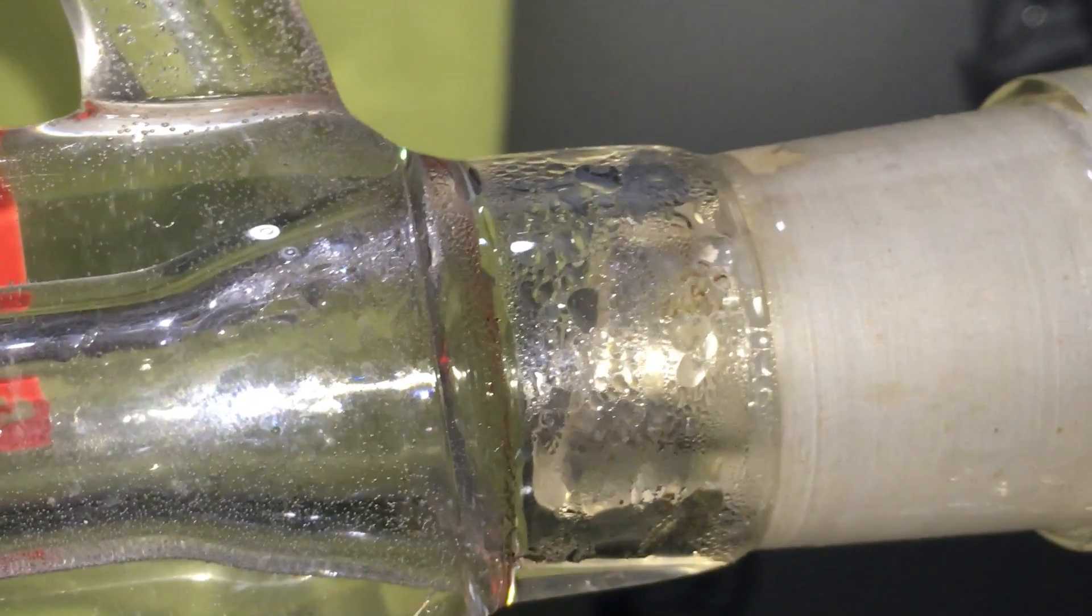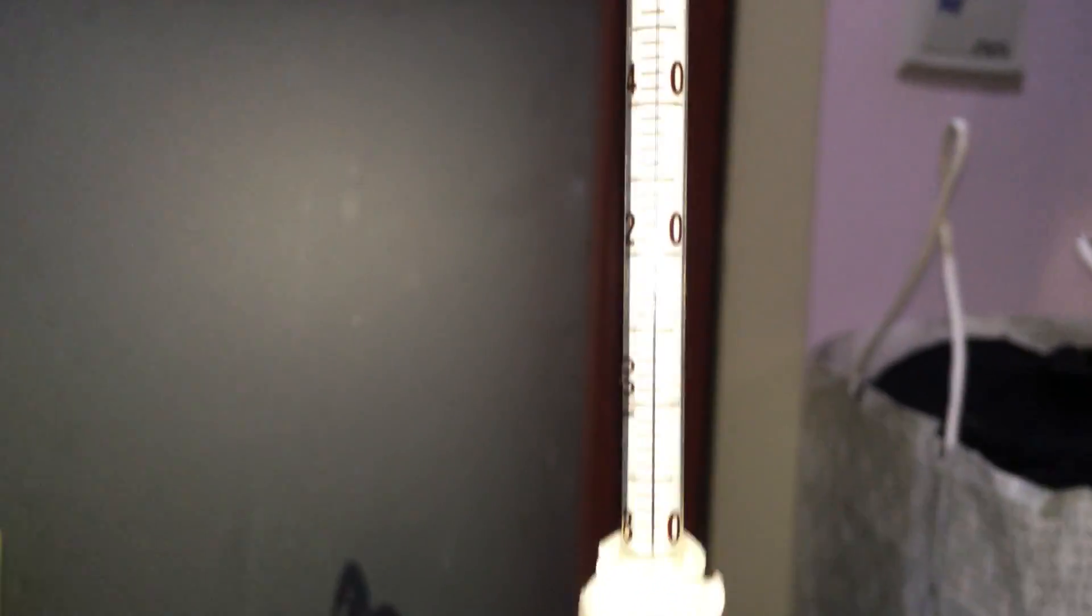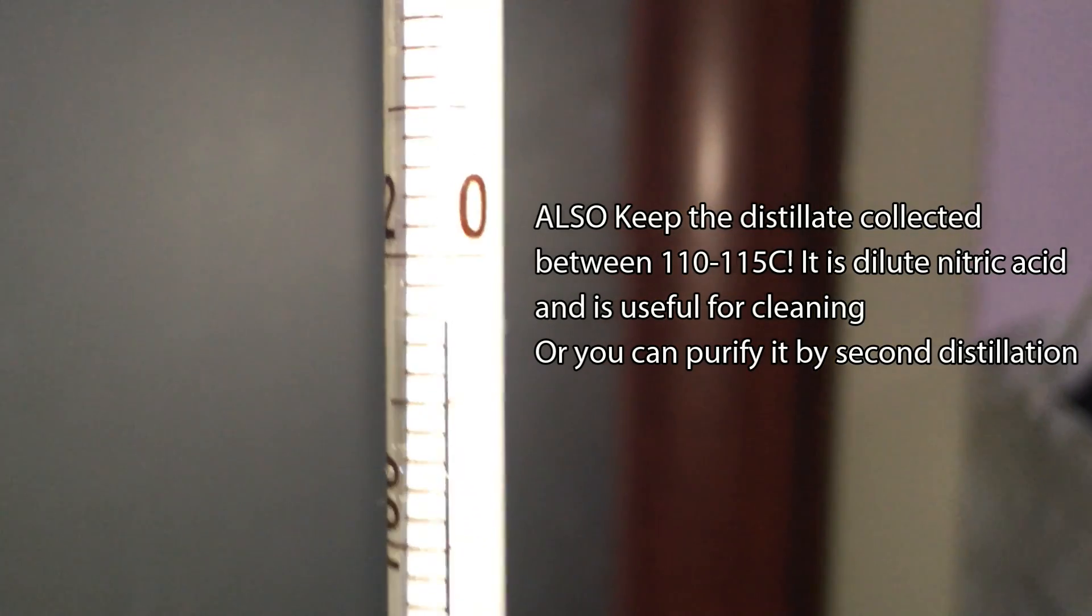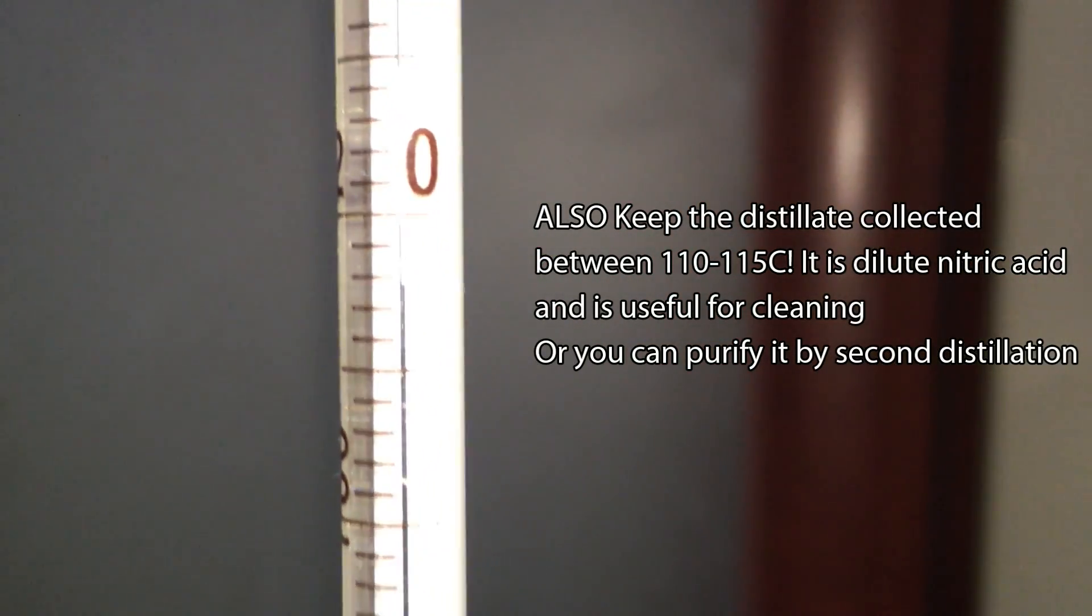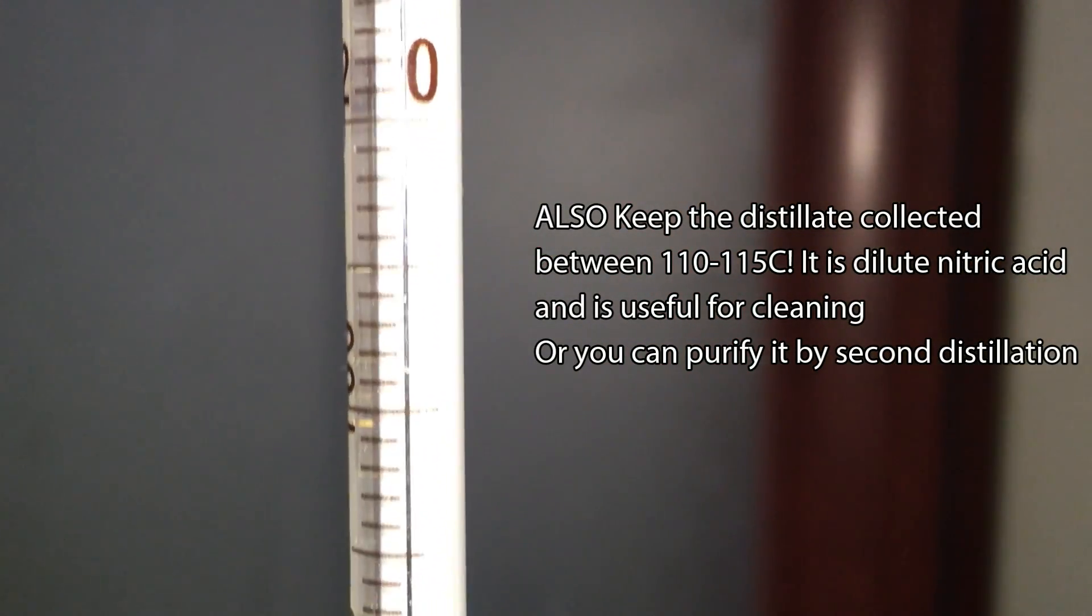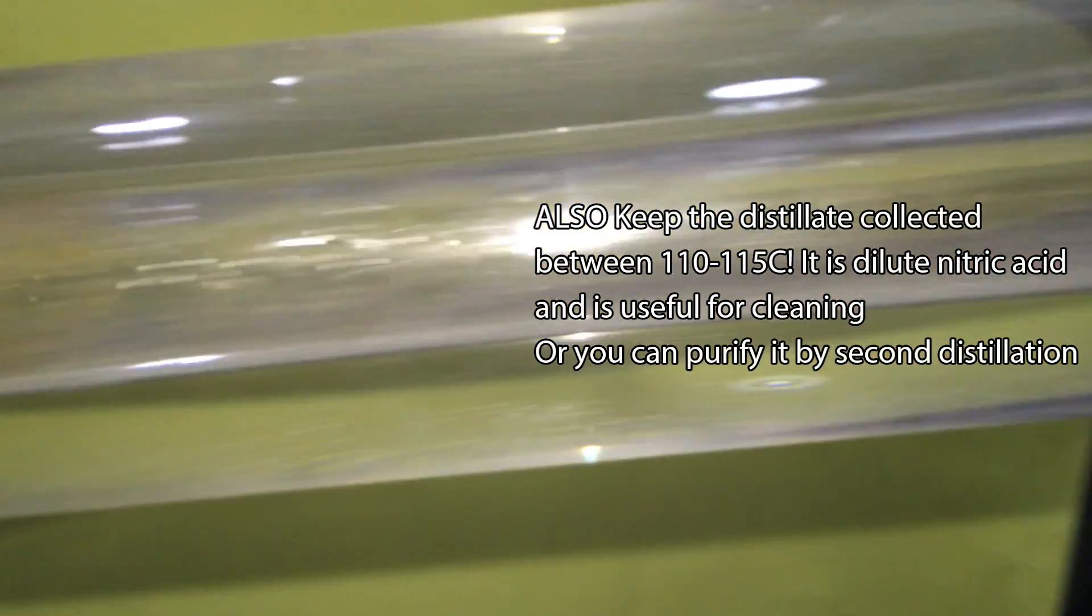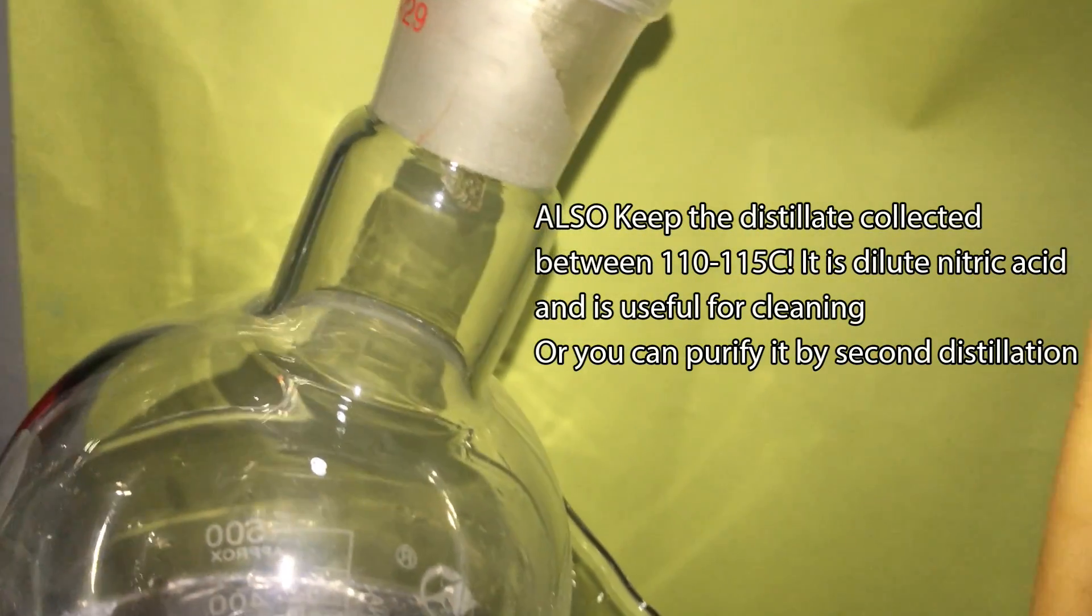So the vapor enters the condenser. Let's check out our receiving flask. As you can see, nothing is coming off. Our first milliliter of distillate has come out. Now the temperature reaches around 115C. Get prepared to switch a new flask for collecting the concentrated nitric acid once the temperature gets to 117C.